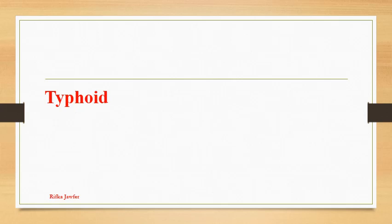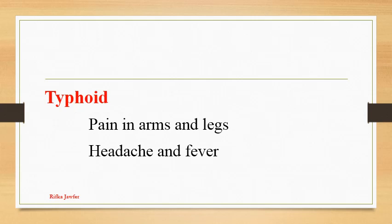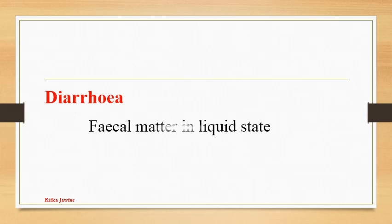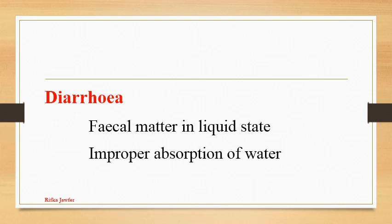Typhoid is caused by a bacterium transmitted through food and water. The symptoms are pain in arms and legs, headache and fever. It can be prevented by getting a vaccine. Diarrhea occurs when intestines are infected with a virus, bacteria or parasite. It is transmitted by the feces of an infected person. The symptom is release of fecal matter in liquid state, caused due to improper absorption of water in the large intestine.